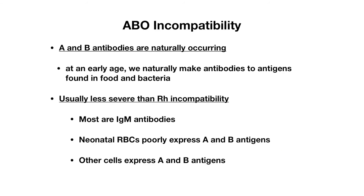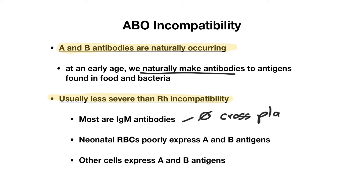With ABO incompatibility, A and B antibodies are naturally occurring. At an early age, we naturally make antibodies to antigens found in food and bacteria. ABO incompatibility is usually less severe than RH incompatibility because most antibodies involved are IgM antibodies, which do not cross the placenta. Additionally, neonatal RBCs actually poorly express both A and B antigens.